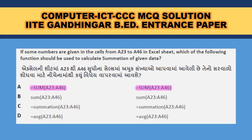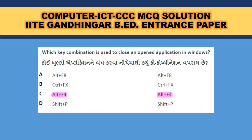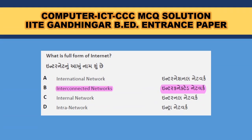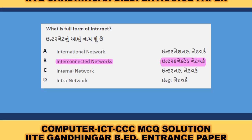If some numbers are given in cells A23 to A46 in an Excel sheet, which function should be used to calculate the summation? Summation means making a total — equal to SUM and the range, so A is the correct answer. Which key combination is used to close an open application? Alt + F4. What is the full form of Internet? Interconnected Network.